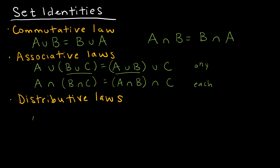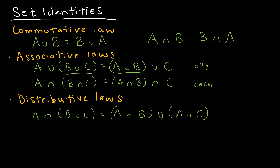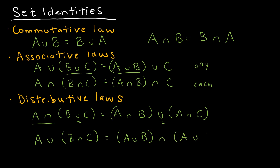The distributive law: A intersect (B union C) gives me the same value as (A intersect B) union (A intersect C) — I'm distributing the A intersect to both values on the inside and leaving the union exactly where it was. Similarly, A union (B intersect C) equals (A union B) intersect (A union C).